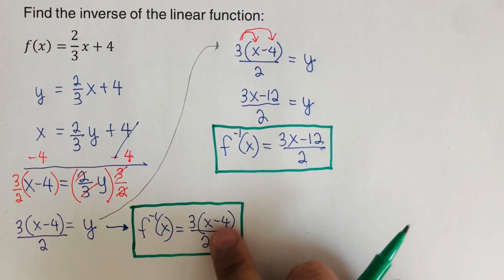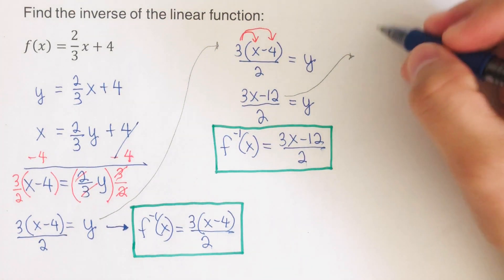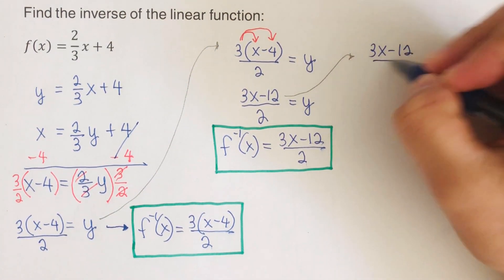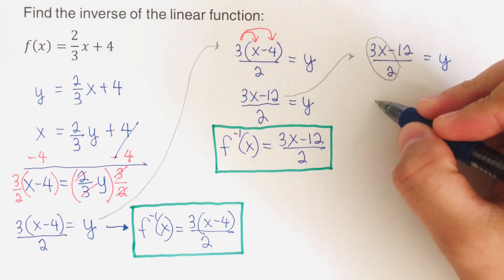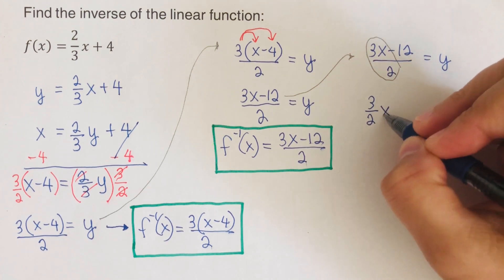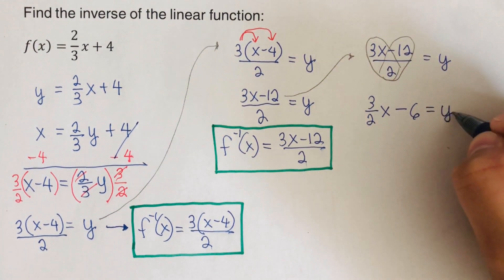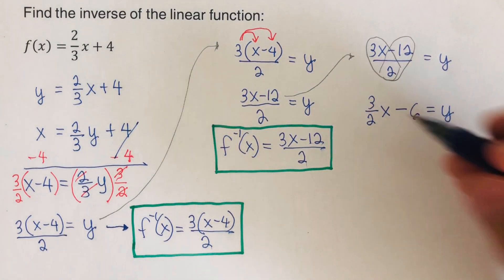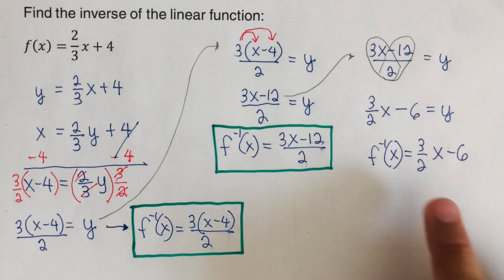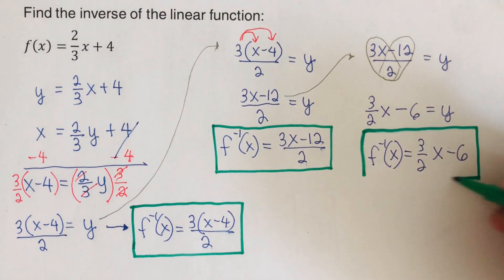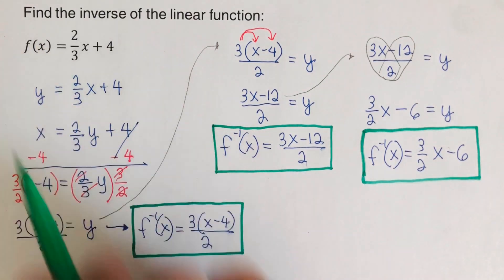We can break this down further: since 2 is shared by both terms, we rewrite as (3/2)x - 12/2. Since 12 ÷ 2 = 6, this becomes (3/2)x - 6 = y. So f⁻¹(x) = (3/2)x - 6. This is in y = mx + b form. All three inverse expressions are equivalent and represent the same inverse.